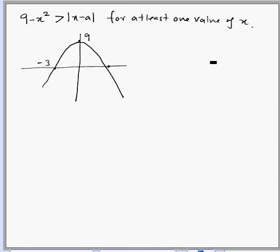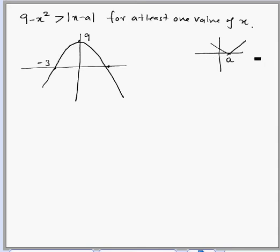The graph of |x - a| is a triangular-shaped graph where the tip is at a. As we change the value of a, this triangular graph moves horizontally — increasing a moves it to the right and decreasing a moves it to the left.